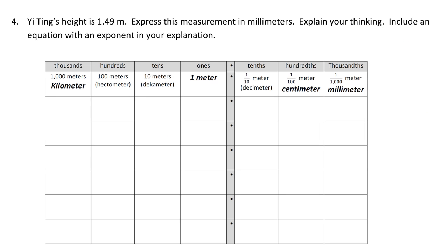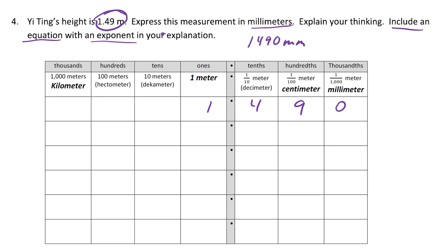We have one more section with three word problems. For Yi-Ting's height — 1 and 49 hundredths of a meter — they want to know what this is in millimeters. We go 1 and 49 hundredths, add a zero to get to millimeters, so our answer is 1,490 millimeters. The equation: 1 and 49 hundredths times 10 to the third power equals 1,490.